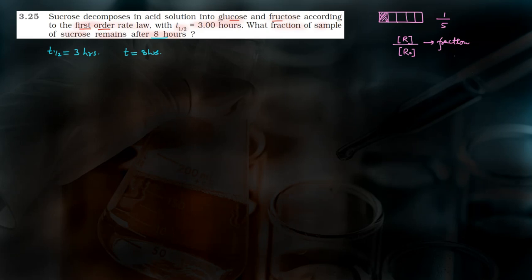इसको calculate करने के लिए हमें integrated rate law लिखना होगा। Integrated rate law: k equals to 2.303 divided by t, into log of [R]₀ divided by [R].